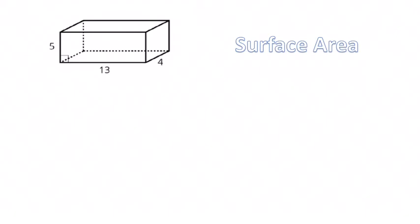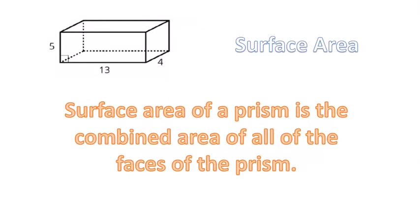Okay guys, here we're going to look at surface area of prisms. And surface area, just so you know, is the combined area of all of the exposed faces of a prism. So basically, it's the area of every single face combined.